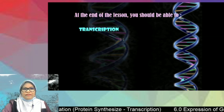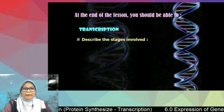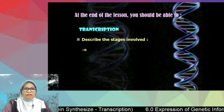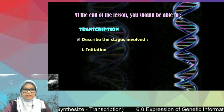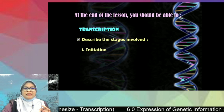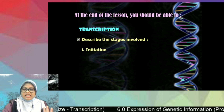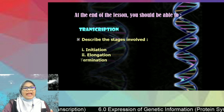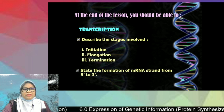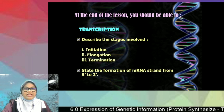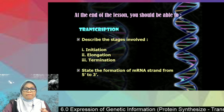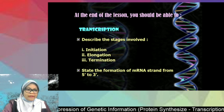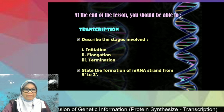At the end of the lesson you should be able to describe the three stages involved in transcription — initiation, elongation, and termination — and state the formation of the mRNA strand from five prime to three prime.